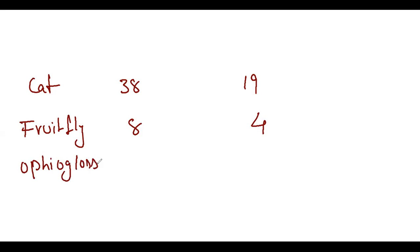Ophioglossum - this is a fern, a pteridophyte. You need to remember 1260 chromosomes. Ophioglossum, also called snake fern or snake tongue. So 1260 chromosomes - it is the highest.